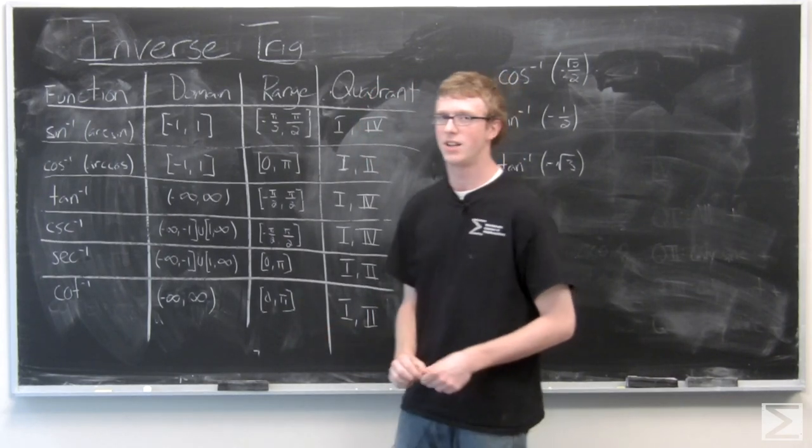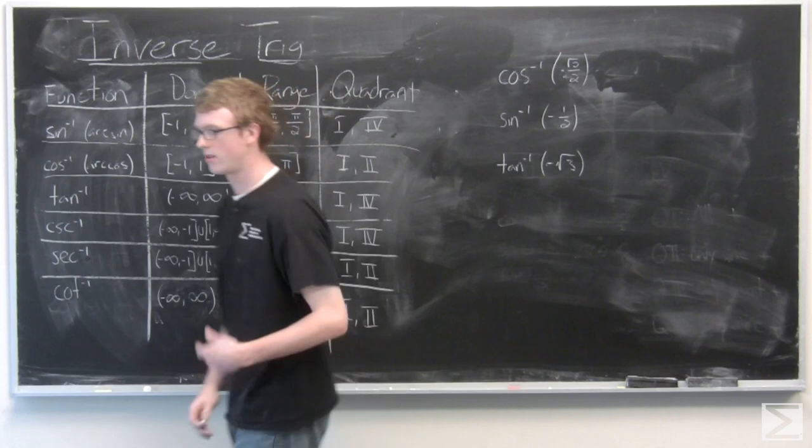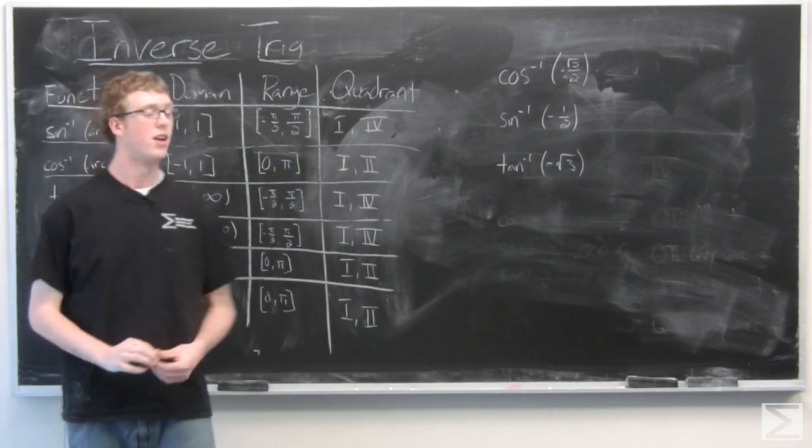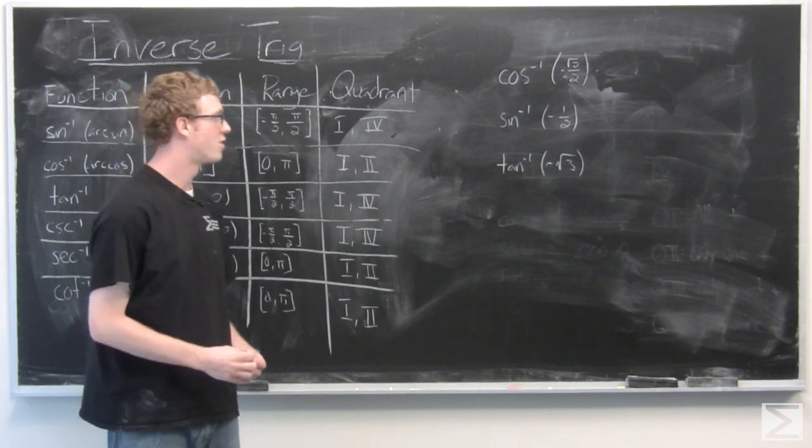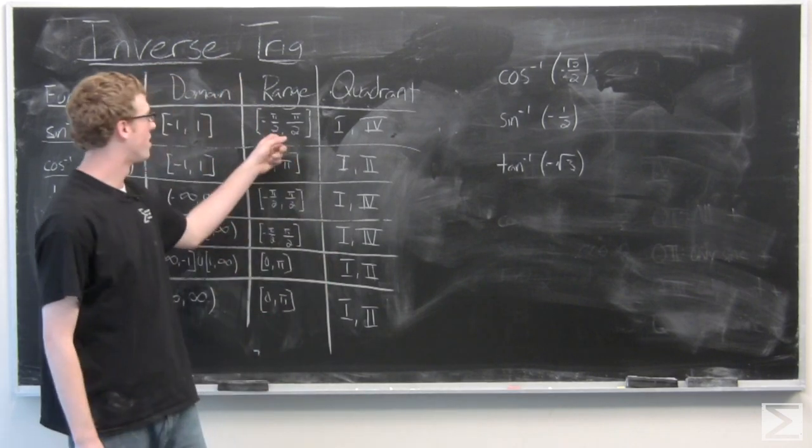This means that if we find an angle in quadrant 4, which is what we may come up with if we're looking at a sine, we need to subtract 2π from it so that that value is in the range.